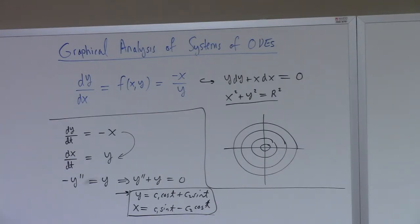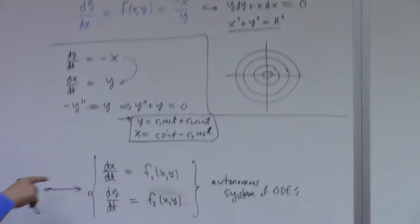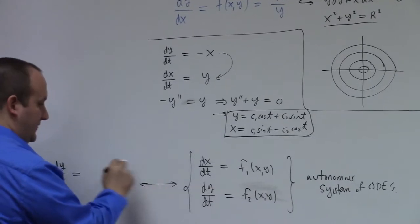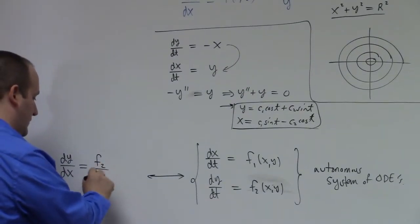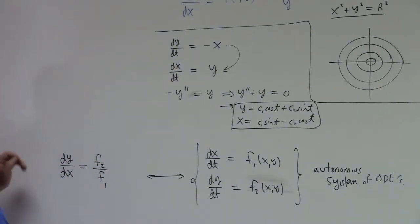One of the things that makes it easier to understand these: notice there's no time here. Some books will say this corresponds to the so-called phase equation. Phase equation dy/dx equals, notice there's no time here in the phase equation, dy/dx equals f2 over f1.